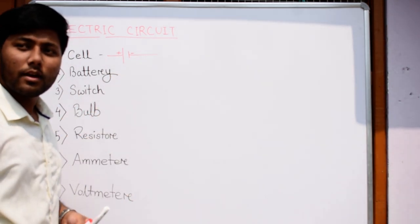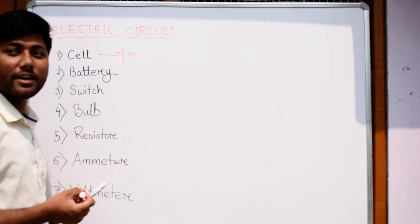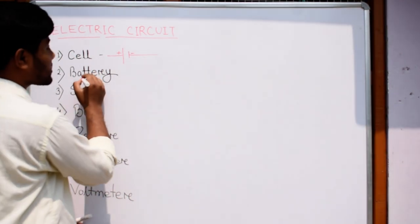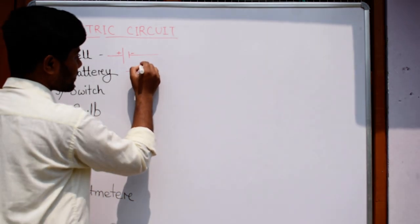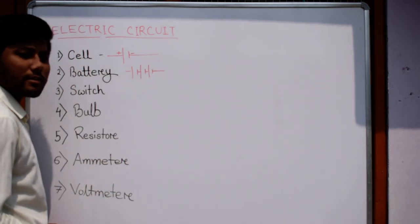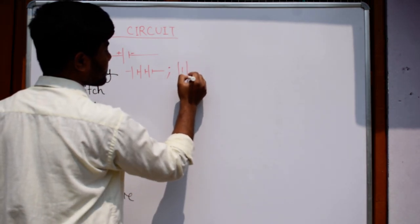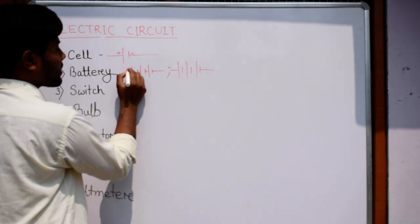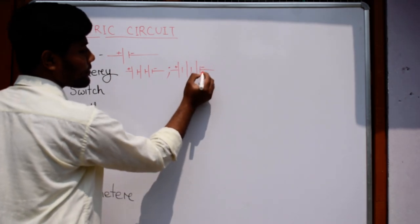Now what happens if there are more cells? The cells are the basic unit, but if the number of cells is more than one, it is called the battery. You can denote it like this or you can also show it this way. This is the battery, where the longer side is the positive and the shorter side is the negative.